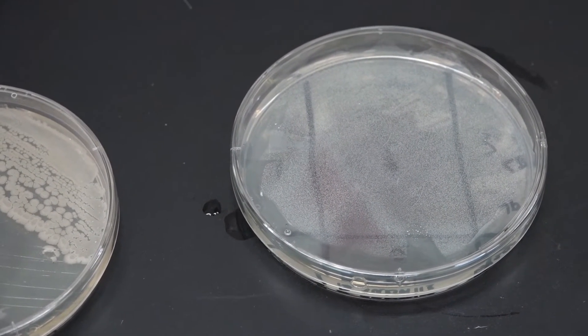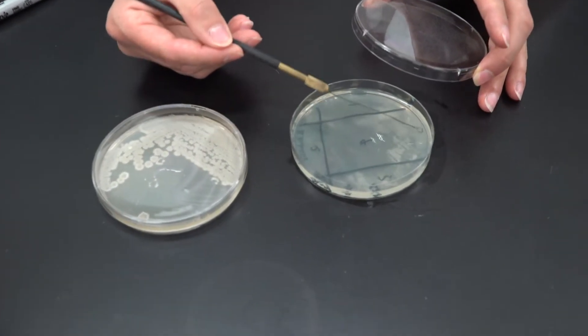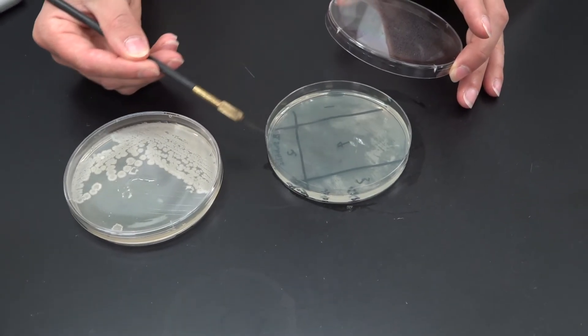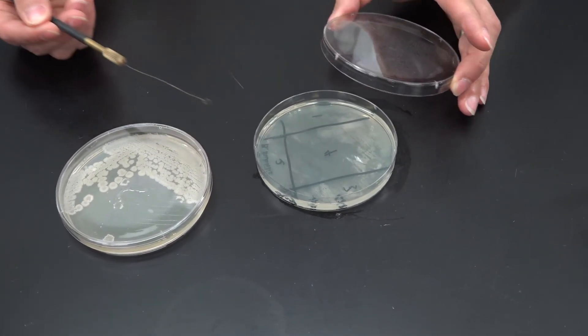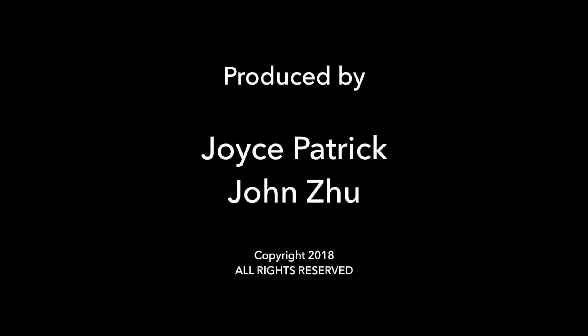Sterilize your loop one final time. Then you're going to streak from three and spread throughout all of quadrant four. Use up all the plate space you have.